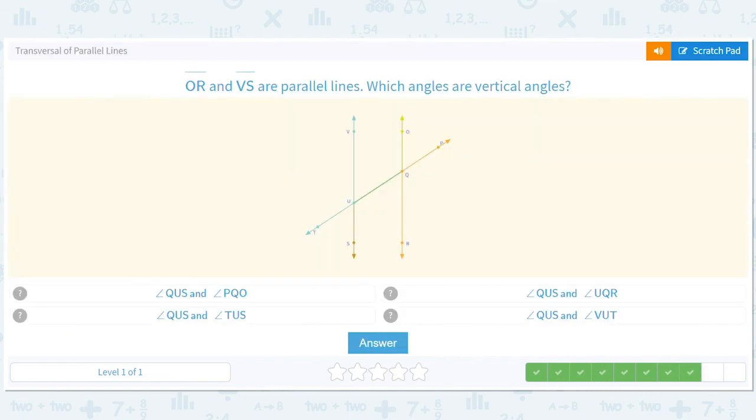Which angles are vertical angles? So we're doing QUS. So QUS is this. Its vertical angle would be that, which would be VUT or TUV. So it's this one. I don't think any of these other ones are going to work. QUS UQR. No. I mean, yeah. The only other thing that would be possible is TUV, and that's all. So we'll just go with that.